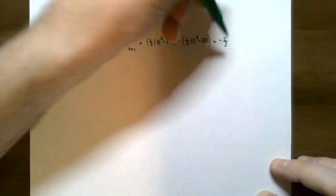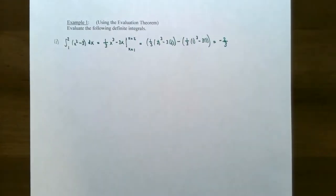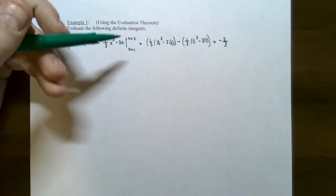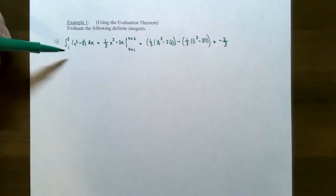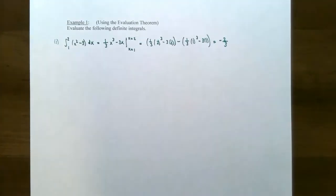So in other words, the area under the curve bounded by the x-axis and the vertical lines x equals one and x equals two has the value negative two-thirds.